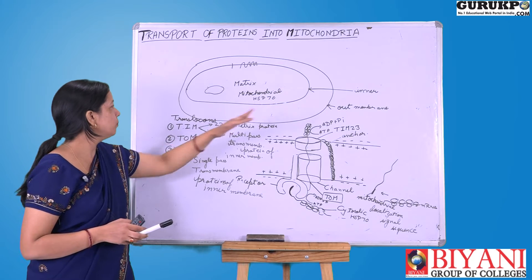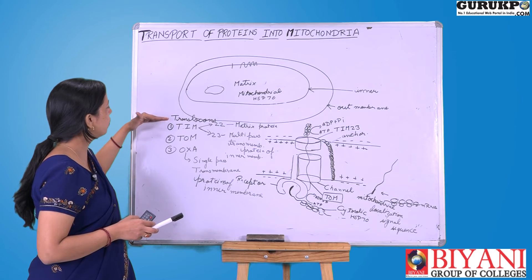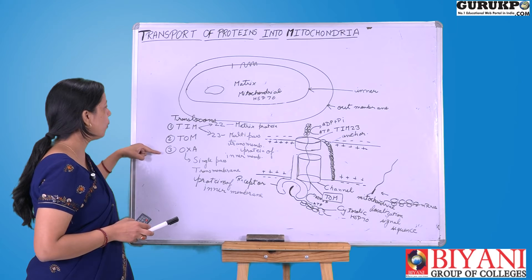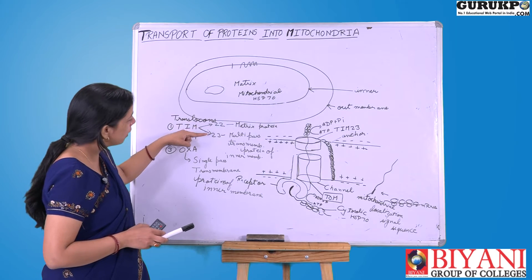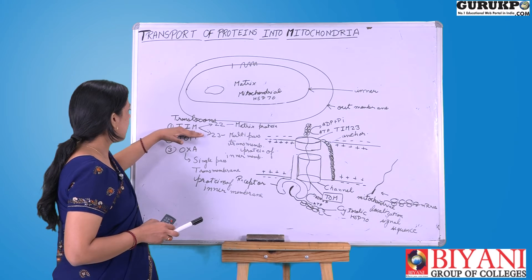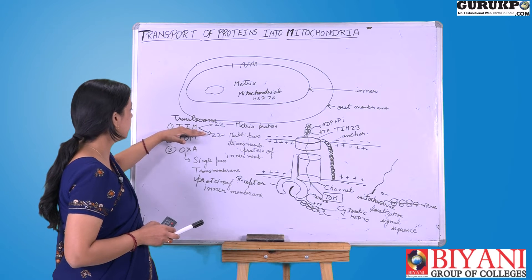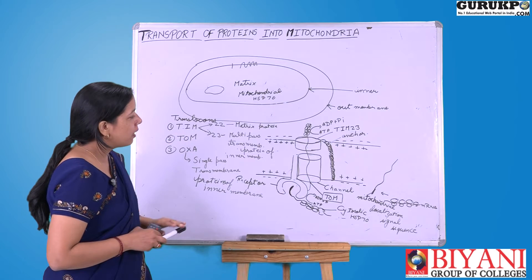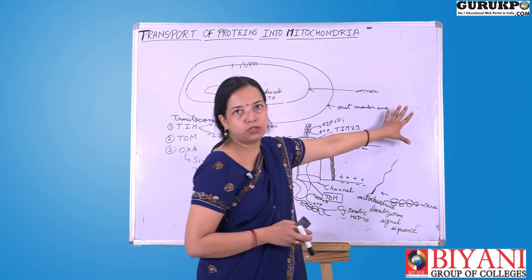For the transport of proteins synthesized by the nuclear genome, there are three translocons present in the mitochondrial membrane: TOM, TIM, and OXA. TIM is of two types — TIM22 and TIM23. TIM is the translocon of the inner mitochondrial membrane, and TOM is the translocon of the outer mitochondrial membrane.